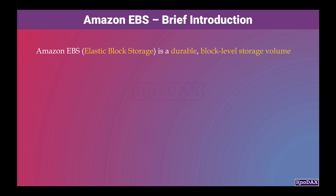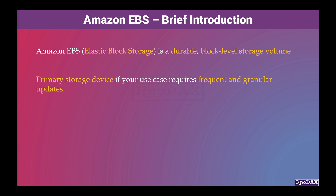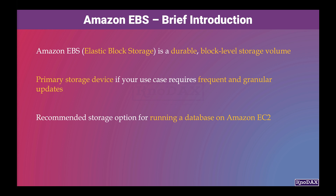You can use Amazon EBS as a primary storage device if your use case requires frequent and granular updates. For example, Amazon EBS is the recommended storage option for running databases on Amazon EC2.